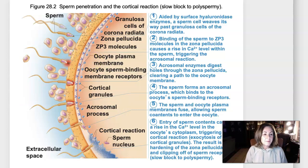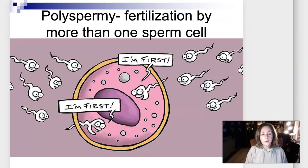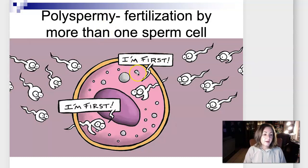Because many sperm are trying to fertilize the egg, we need to prevent more than one sperm cell from fertilizing it. If more than one sperm cell enters the secondary oocyte, that's known as polyspermy, and that would be a non-viable cell. That fertilized egg would never even divide once because it has the wrong amount of DNA — it would have three sets of 23 chromosomes. So that's an anomaly, and to prevent polyspermy, there are two reactions that occur.